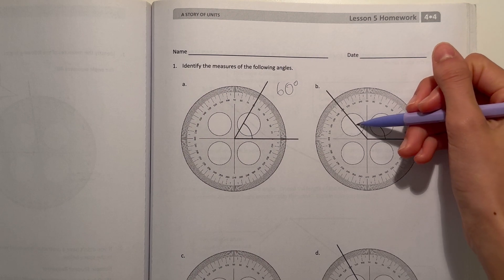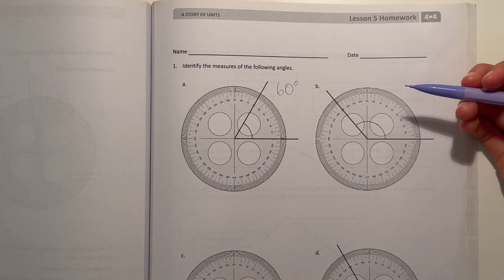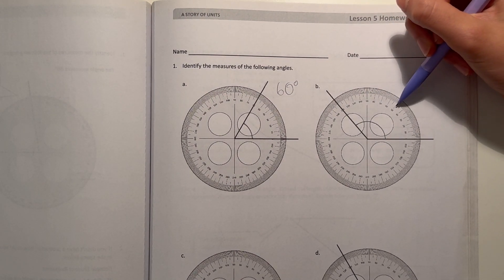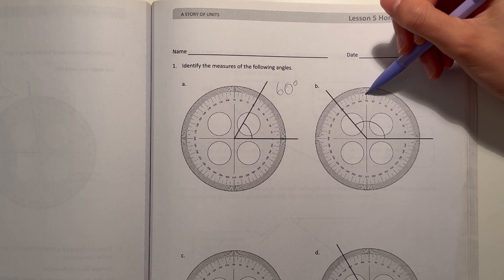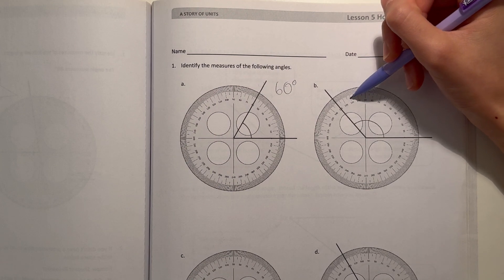Let's look at B. So we're measuring this obtuse angle, so our answer should be more than 90 degrees. So we have 10, 20, 30, 40, 50, 60, 70, 80, 90, 100, and here we have 110, 120, 130. So it lands right at 130 degrees.